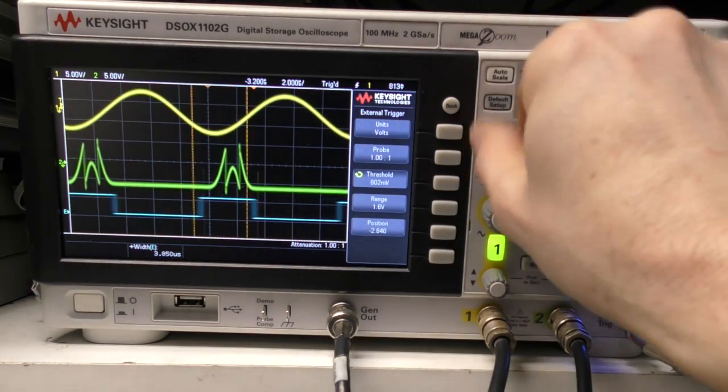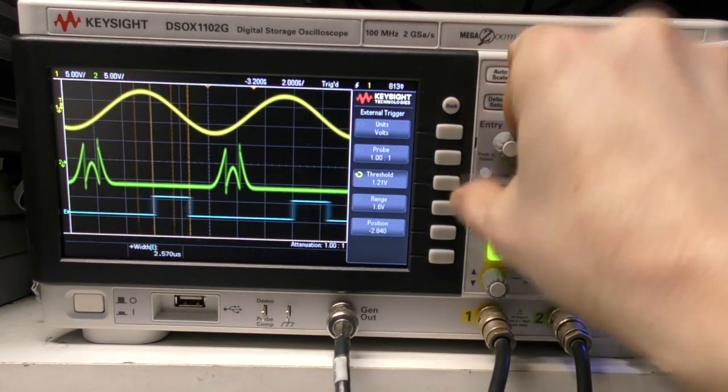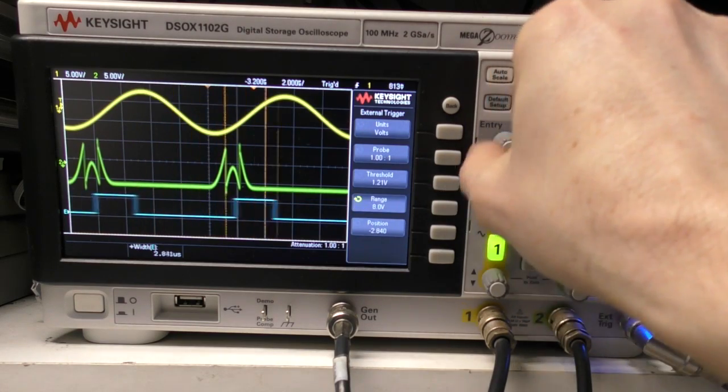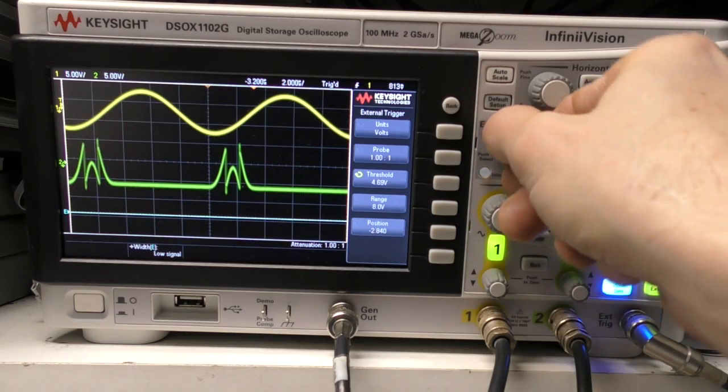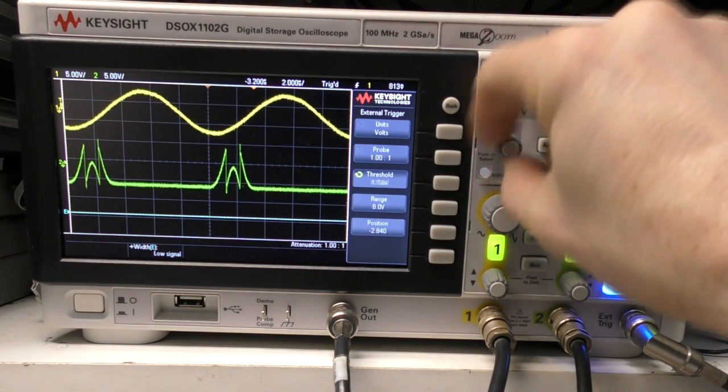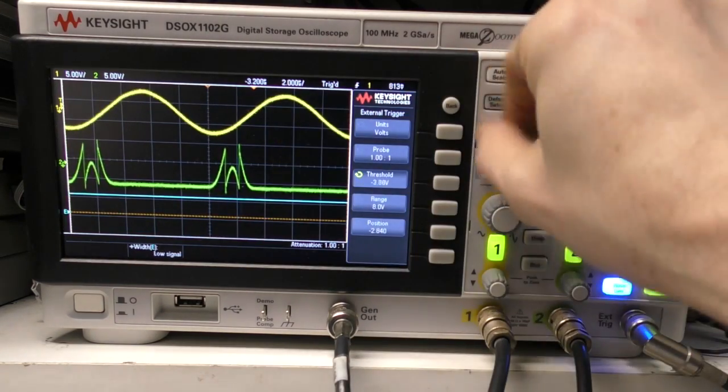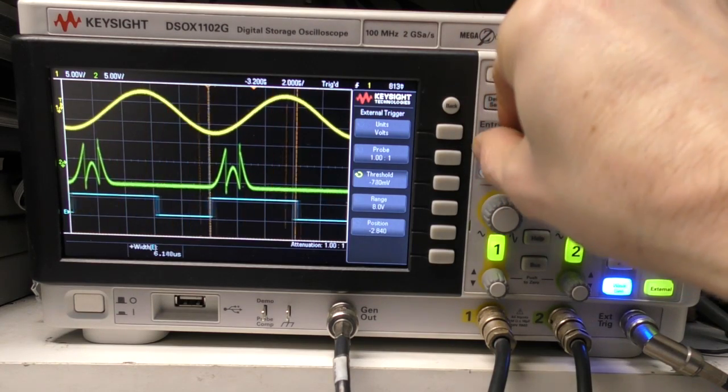And obviously, being a digital channel, that dictates the voltage at which this triggers. If I put this on 8V, if I increase the trigger, obviously that's now above the level of the signal I'm sending it. Similarly, if I go below, it goes high, so that's just setting the threshold on that channel.